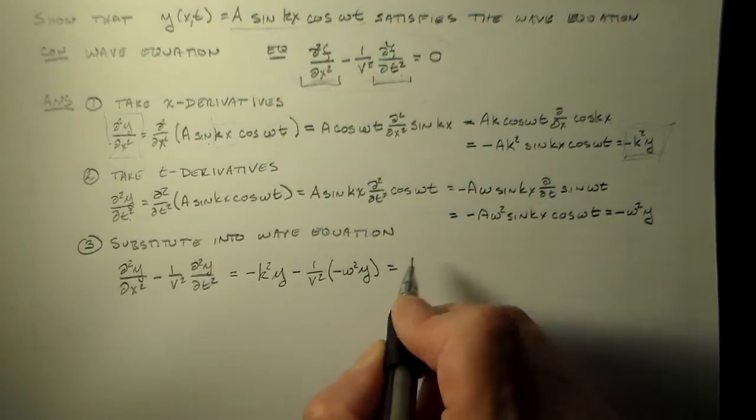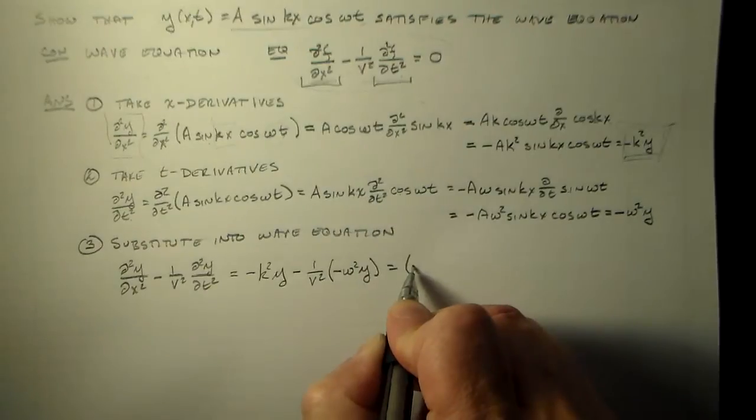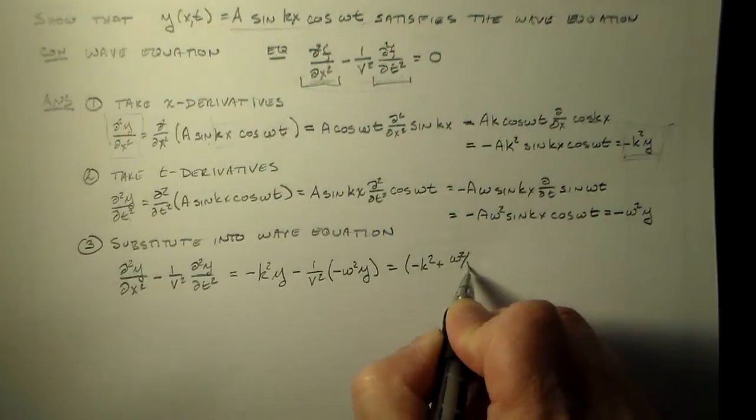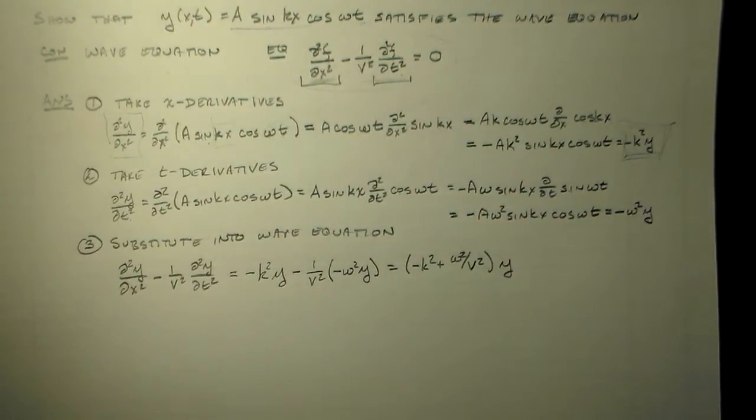Okay, so that's minus plus. So we end up with minus k squared plus omega squared over v squared y. Oh, that doesn't look good, does it? That doesn't look like zero.